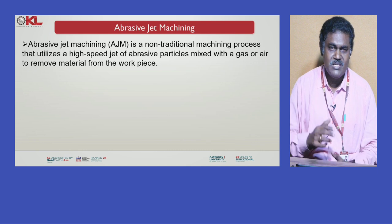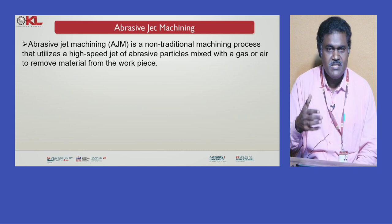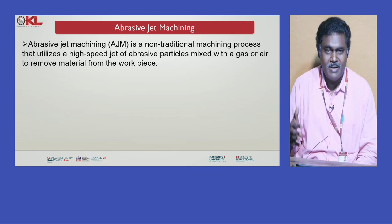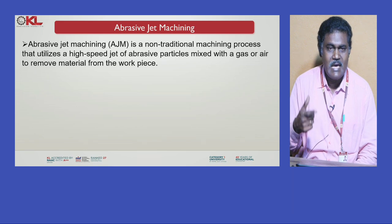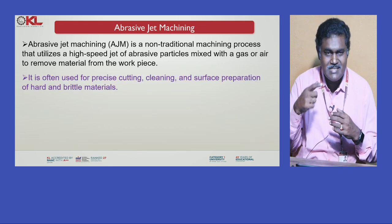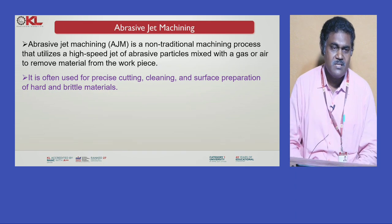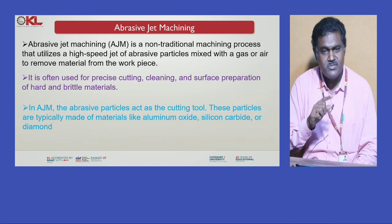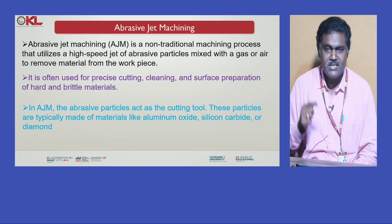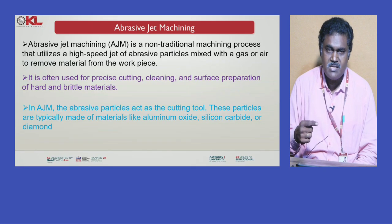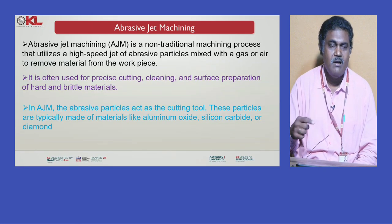Abrasive Jet Machining is a non-traditional machining process that utilizes a high-speed jet of abrasive particles mixed with gas or air to remove material from the workpiece. It is often used for precise cutting, cleaning, and surface preparation of hard and brittle materials. The abrasive particles act as the cutting tool and are typically made of materials like aluminum oxide, silicon carbide, or diamond.